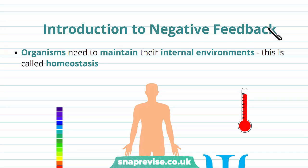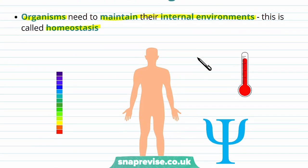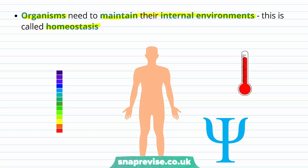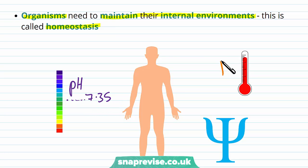Negative feedback is a process that we see a lot of times in the body. We've talked about how organisms need to maintain their internal environment, and this process is known as homeostasis. It applies to many factors inside the body — this can be pH, which must be maintained at about 7.35, temperature, and water potential, so that the blood and tissues have the right level of water.